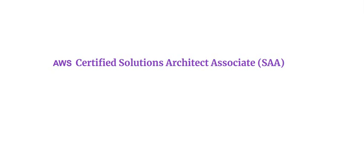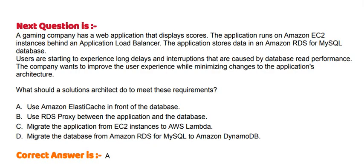Today's question is: A gaming company has a web application that displays scores. The application runs on Amazon EC2 instances behind an application load balancer. The application stores data in an Amazon RDS for MySQL database. Users are starting to experience long delays and interruptions that are caused by database read performance. The company wants to improve the user experience while minimizing changes to the application's architecture. What should a solutions architect do to meet these requirements?